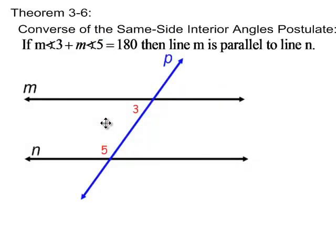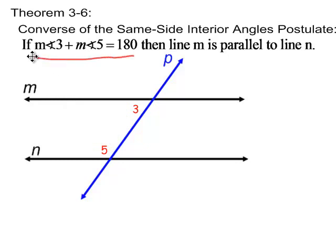Theorem 3-6: the converse of the same-side interior angles postulate. If this angle plus that angle adds up to 180 degrees, then we can conclude that this line is parallel to this line.